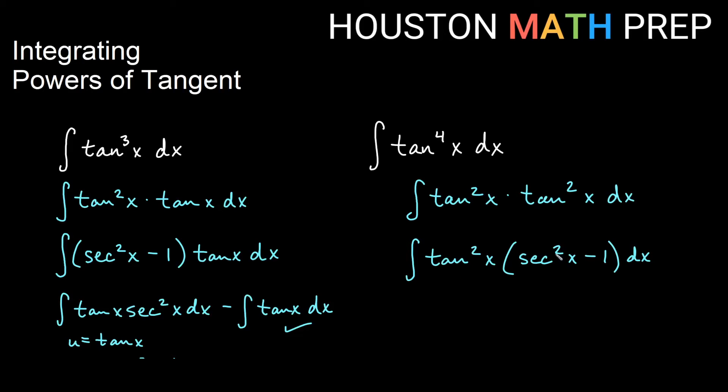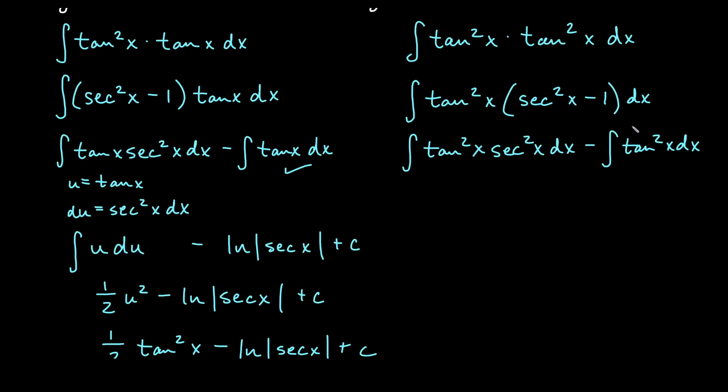We go ahead and distribute the tangent squared x. So we do tan squared x, secant squared x in one integral, and then minus, we do the tan squared x dx in the separate integral. This second integral we already did, so we know what to do with this second one.